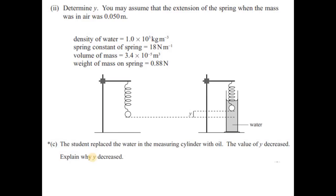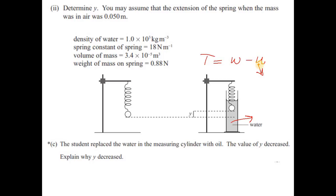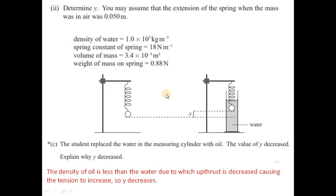The student replaced the water in the measuring cylinder with oil and y decreased. Explain why. Oil has a lower density than water, so the upthrust is decreased. From T = W − upthrust, if upthrust decreases, T increases, and therefore the extension increases. A greater extension means the mass is lower, so y decreases.